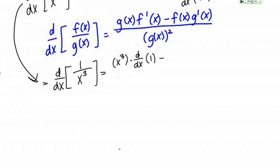minus the top times the derivative of the bottom. So minus 1 times the derivative of x cubed, and that's all over the bottom squared. So quantity x cubed squared.